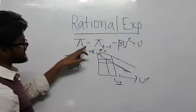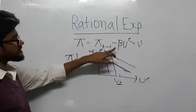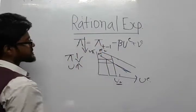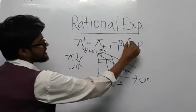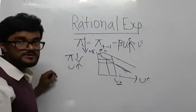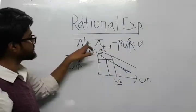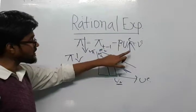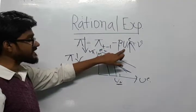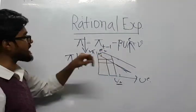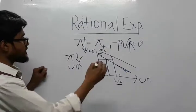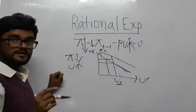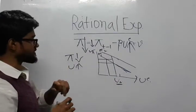The basic problem with adaptive expectation is that when you reduce inflation, the unemployment rate is likely to increase, because they are inversely related to each other. This can be compensated by changing the expected inflation rate.